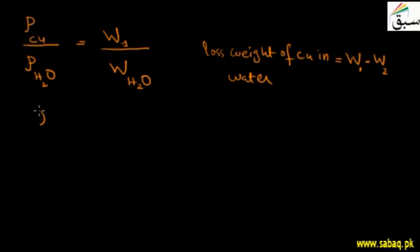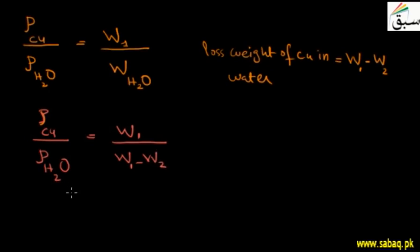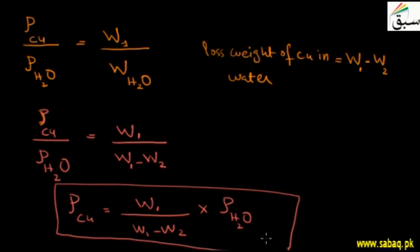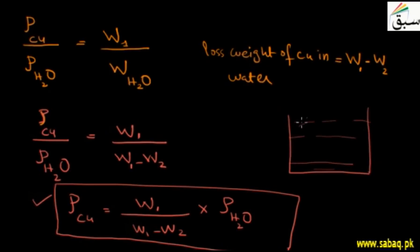So I can write it this way: the density of copper divided by the density of water equals W1 divided by W1 minus W2. Students, we can easily find the density of copper as W1 divided by (W1 minus W2) multiplied by the density of water. This is the equation for any material placed in water — if you have a container of water and put any material in it, you can find its density using this concept.